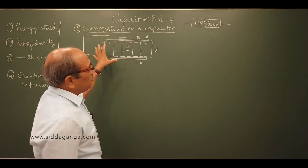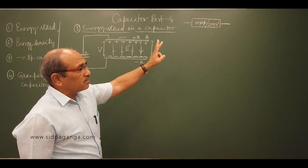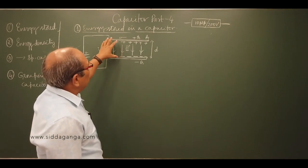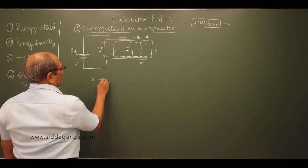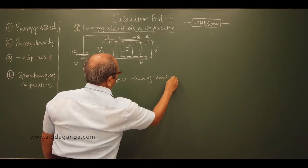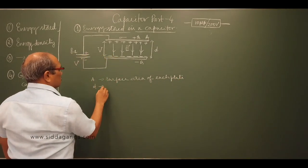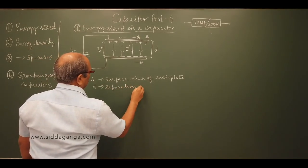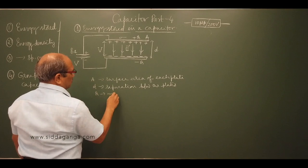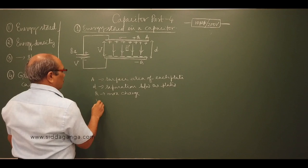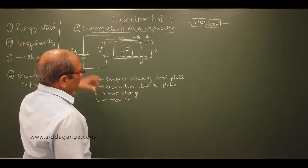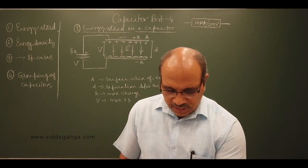Always a capacitor is mentioned with two data: one is the capacitance value, and another is the maximum supply voltage. Coming back to this — we are given a capacitor with surface area A, maximum charge Q that may be stored, and V, the maximum potential difference it may gain. I connected the battery with that and now I want to get the expression for energy stored.